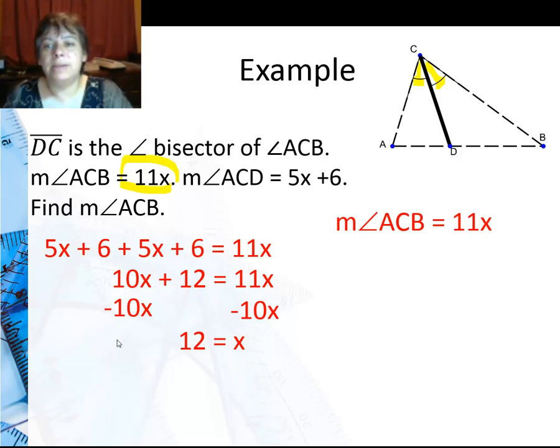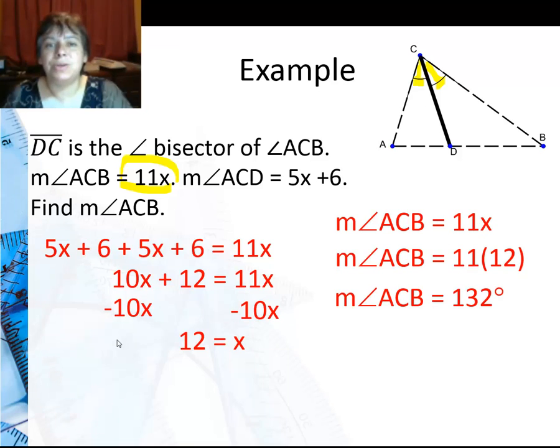Now I can go ahead and substitute back into angle ACB, and 11 times 12 is 132 degrees.